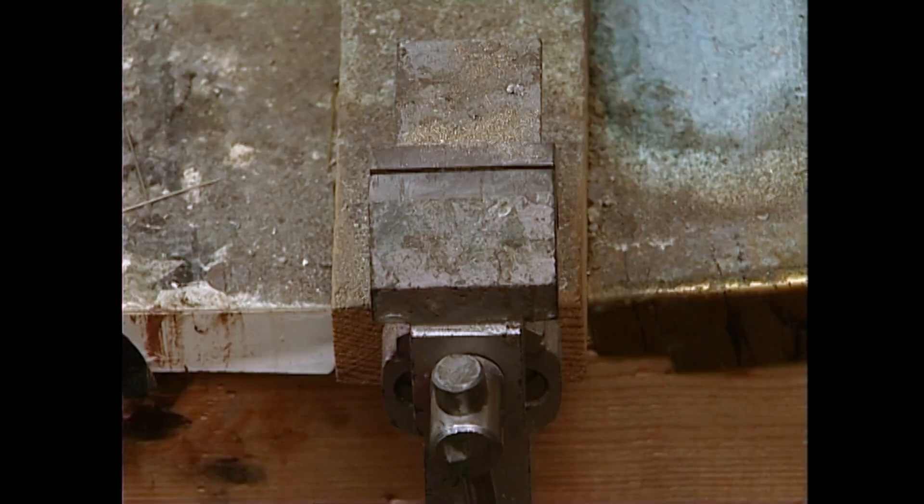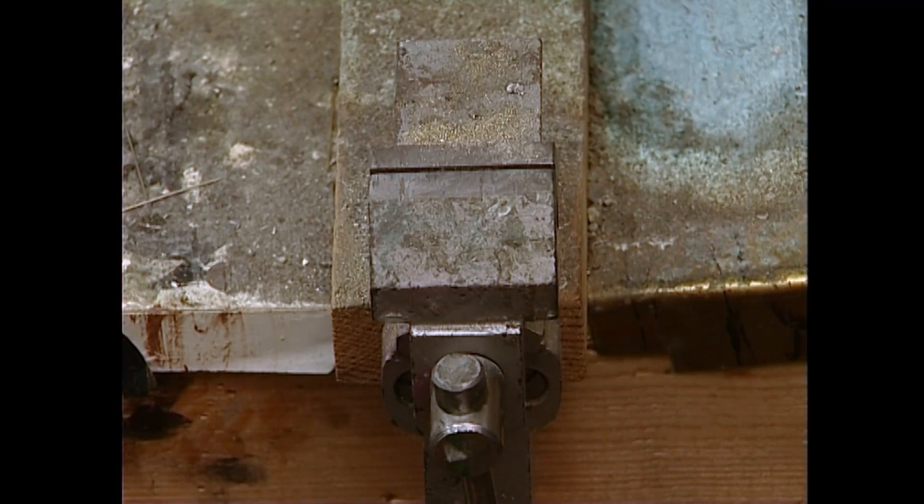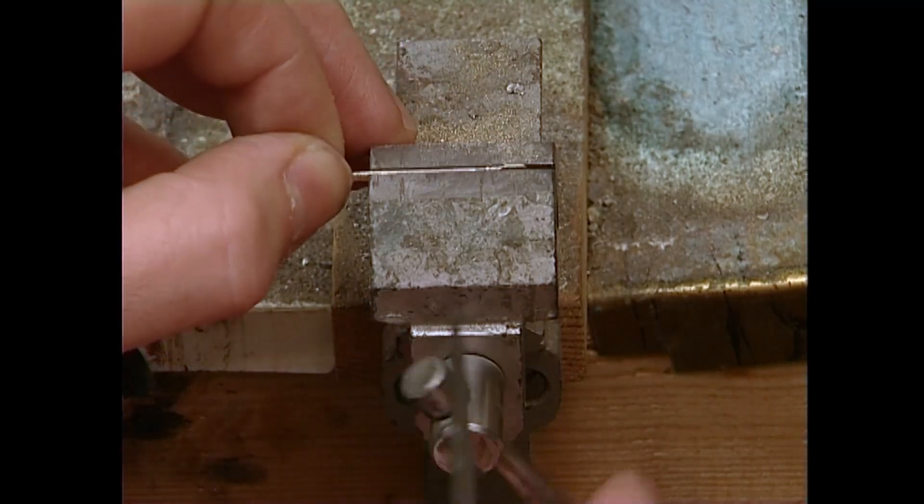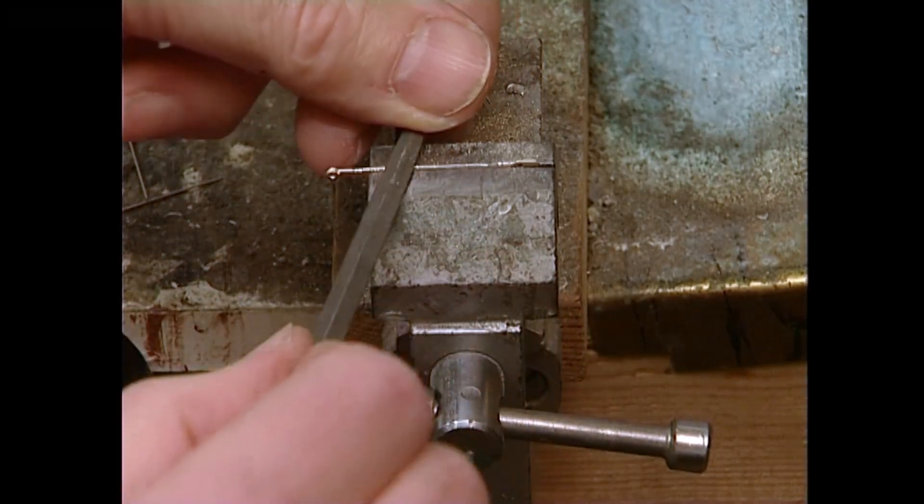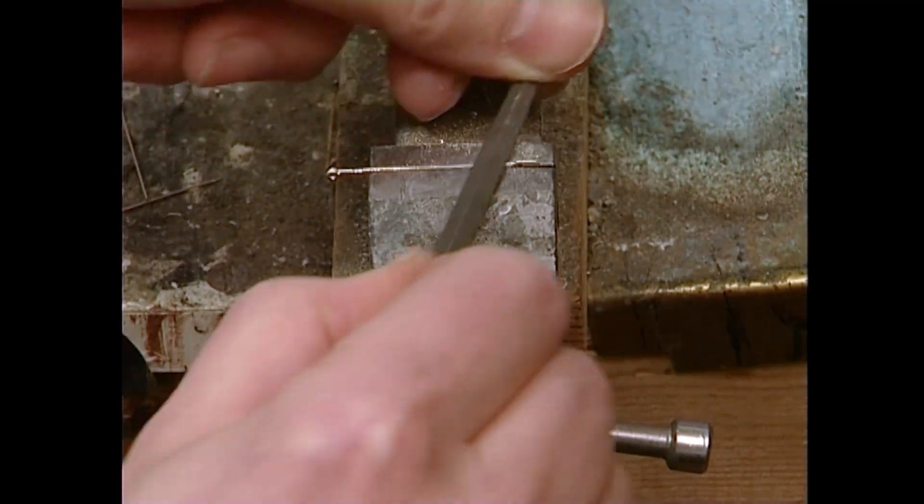And we use a small vise and a fine file to do that. Clamp the rod, the laminate, in the vise. Gently clean it up.